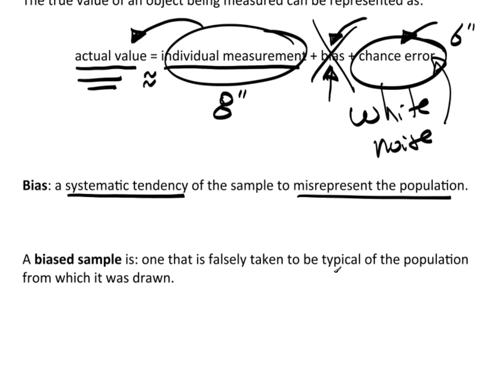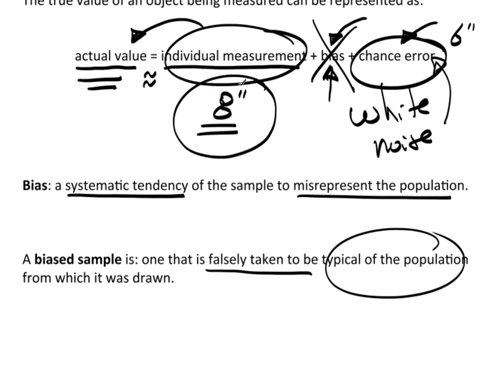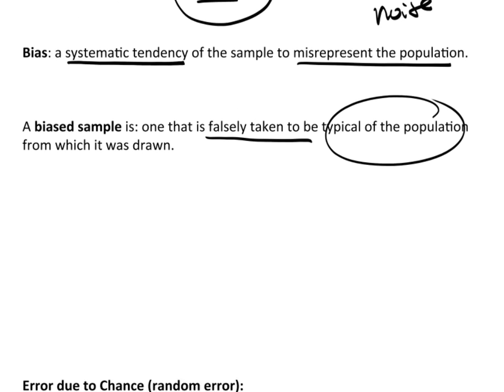Now, a biased sample is one that's falsely taken to be typical of the population from which it was drawn. Let's go back to this Christmas tree example. If we want to know what the average height of all the Christmas trees was that we sold this year, and every one of them was measured sitting up on an eight inch stand, well, it is a false measurement. So, this whole sample is falsely taken to be typical. We would use that as an average. This is assuming that we didn't really realize that we had an eight inch overestimate on every tree. So, we're falsely taking this biased sample to be representative of the population.